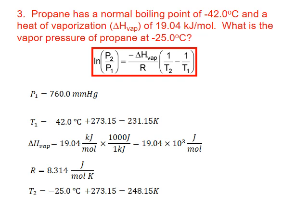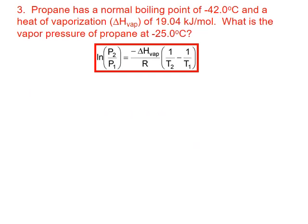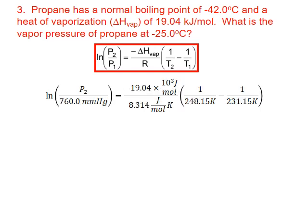Our second temperature is negative 25 degrees Celsius, converted to kelvin by adding 273.15. Finally, we're solving for P2. We substitute all of this information into our two-point form of the Clausius-Clapeyron equation.